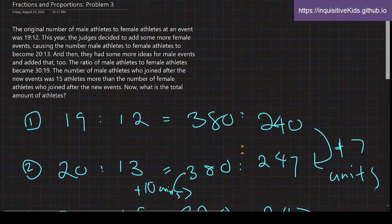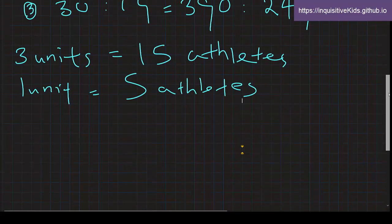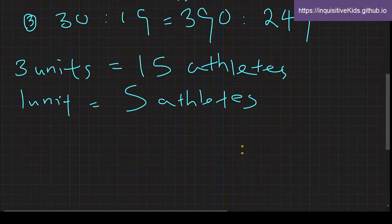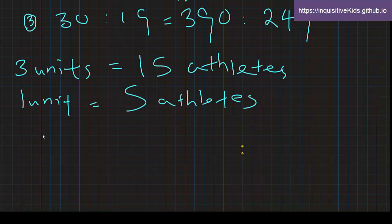All right, now we're trying to find what is the total amount of athletes here after these two changes. So what is the total amount of units? Let's look at ratio 3, and we have the sum of 390 and 247 times 5.